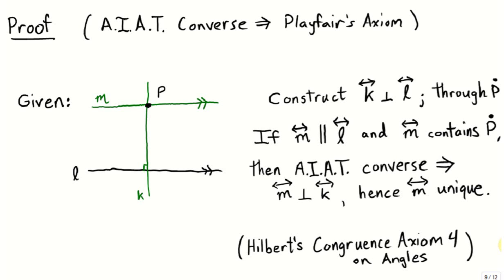Next, we'll prove the reverse implication. We'll show that, assuming the AIAT converse, we can show Playfair's axiom is true. We begin with our line L and a point P not on L. To show that Playfair's axiom is true, we have to show that there is a unique line through P parallel to L. Here's one way to create a parallel line: let's construct a perpendicular to L through the point P. We'll call that line K. Next, we observe that any line parallel to L through this point P, by the AIAT converse theorem, must have its alternate interior angles equal.